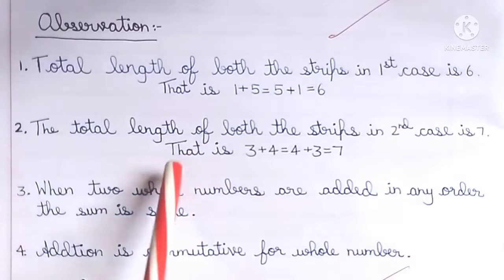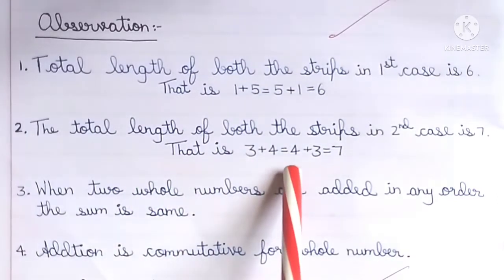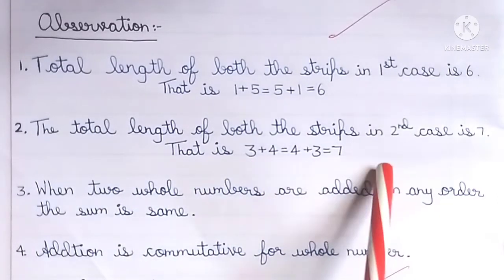The total length of both strips in second case is 7. That is, 3 plus 4 equals 4 plus 3 equals 7.